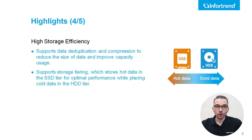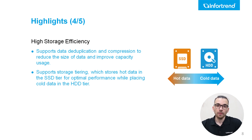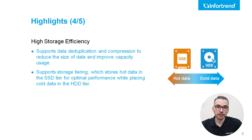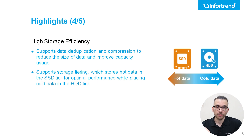Storage tiering is another key feature of our solutions, allowing you to optimize performance and capacity usage by storing data on different storage tiers based on its access patterns. Our systems support automatic storage tiering, which intelligently places hot data requiring frequent access on higher-performance SSD tiers, while placing less frequently accessed cold data on lower-cost HDD tiers. This approach ensures that you can maximize both storage performance and capacity usage.